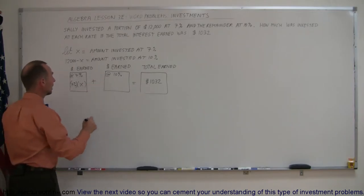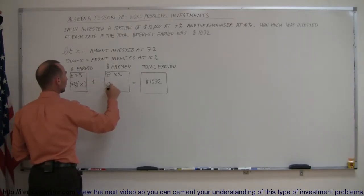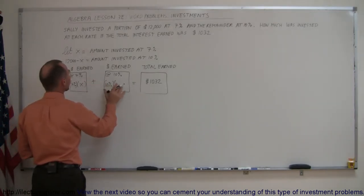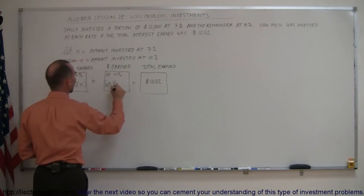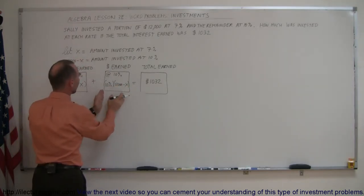And here we take the rate of return, 10%, and multiply times the amount that was invested at that rate, which is $12,000 minus x. So this plus this equals that.